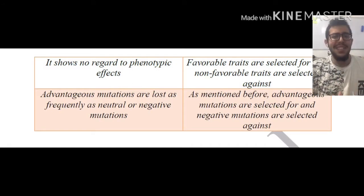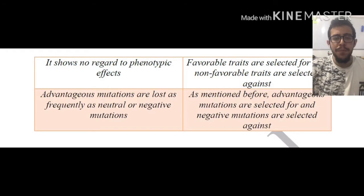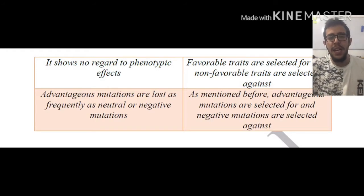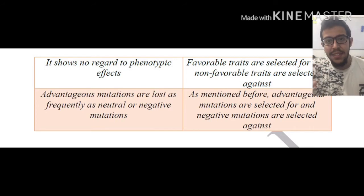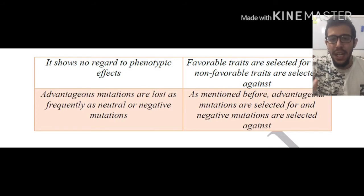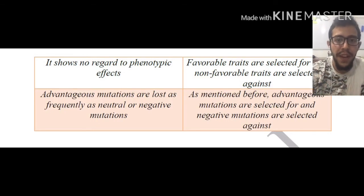Whereas favorable traits — like surviving harsh conditions, or for example the presence of a darker skin pigment to allow survival in areas where the sun is more prevalent or more impactful — this is the idea of natural selection. So favorable traits do matter when talking about natural selection, whereas they play no effect when talking about genetic drift.